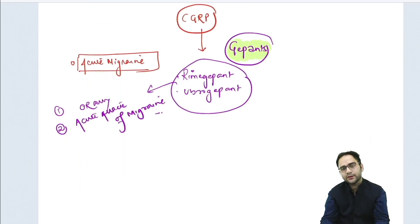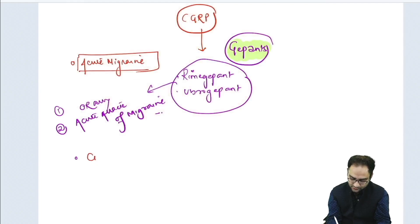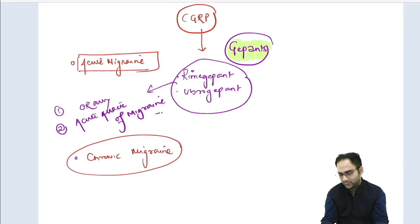Our focus of discussion today is on chronic migraine. How CGRP analogues have brought revolution in the treatment of chronic migraine, that we need to know. First of all, you need to know what is chronic migraine.